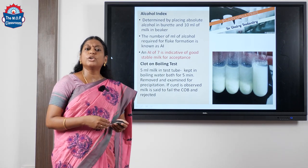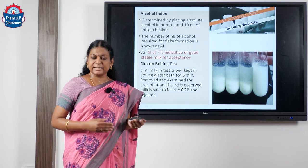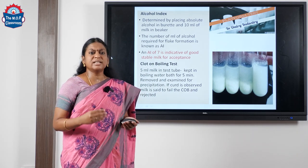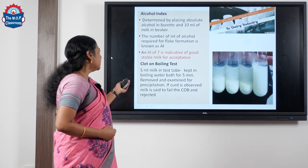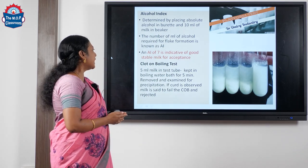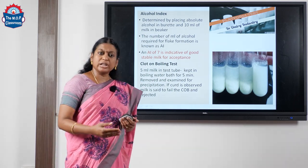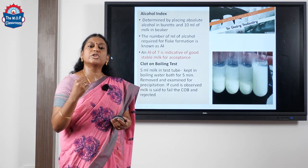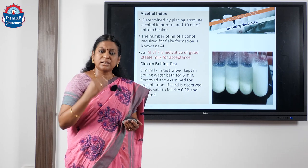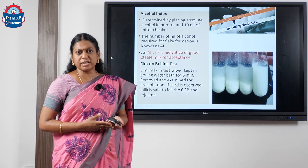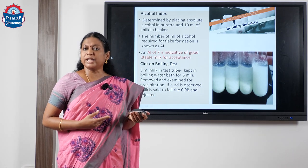Moving on to the alcohol index test: the principle is similar to the alcohol test, and an AA index of 7 is considered good for grade-one milk. Moving on to the clot-on-boiling test, we take 5 ml of milk in a test tube, keep it in a boiling water bath, and check for formation of any curd or precipitate. If we observe any curd-like precipitate, the milk is rejected because it indicates that the milk cannot withstand high heat treatment.